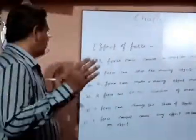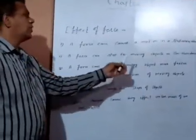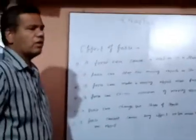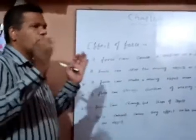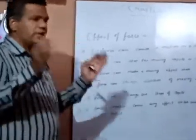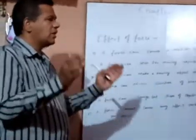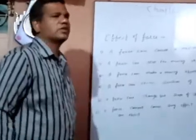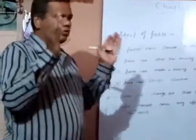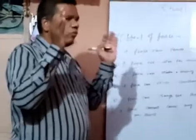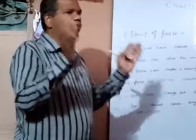Third effect of force: a force can make a moving object move faster. For example, when a football player hits the moving football, the ball starts moving faster. Second example: when the horse pulling a tonga applies more force — that means greater force — the tonga moves faster.